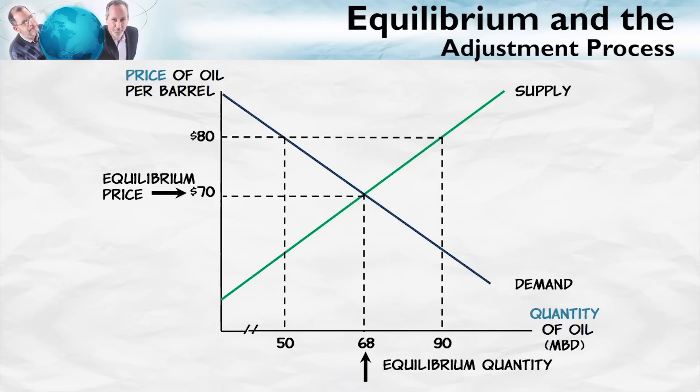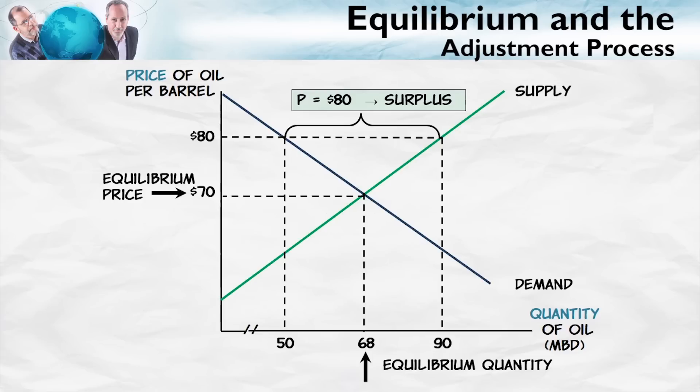So at a price of $80 per barrel, for example, we would have a surplus. The quantity supplied would be greater than the quantity demanded — sellers have more goods than they have customers. And because of that, they have incentives to push the price down towards the equilibrium price.